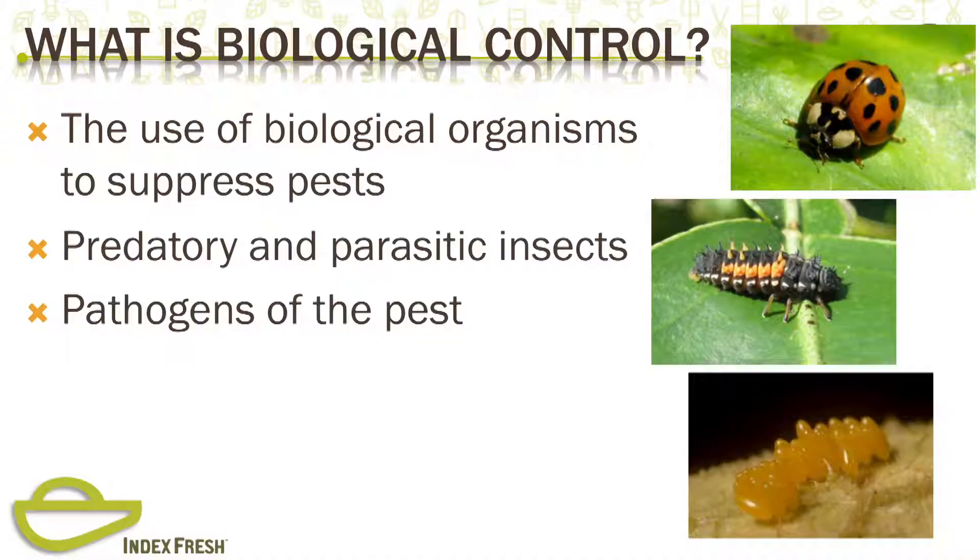Another biological organism is the pathogen of the pest. Just as we have hepatitis, AIDS, and other microorganisms that can attack us, all organisms pretty much have diseases as well — insect and mite pests are no exception. Sometimes it's the pathogen of the pest that wipes out the pest. There's a very common nuclear polyhedrosis virus that affects mites and will sometimes crash a brown mite population so that we don't need to treat it.